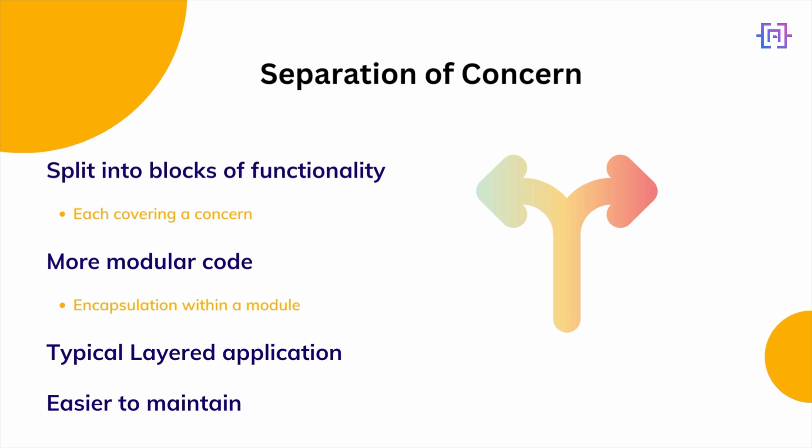When writing a typical layered architecture, each layer is also basically applying separation of concerns. We are separating the UI from the code that contains the business logic, and that in turn is separated from the code that contains the data access logic. Separating concerns into different components also makes the code more maintainable — another key concept we are after for our architecture.